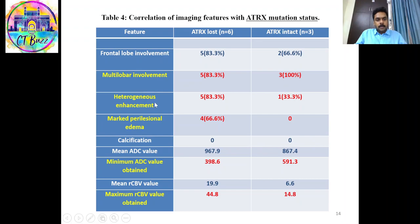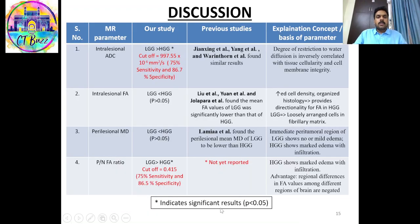Similar findings of multi-lobar involvement, heterogeneous enhancement, and marked peritumoral edema were also assessed for ATRX-lost versus ATRX-intact cases. Marked peritumoral edema was found only in ATRX-lost cases, while the minimum ADC value was lower and the maximum rCBV value was higher in ATRX-lost cases.